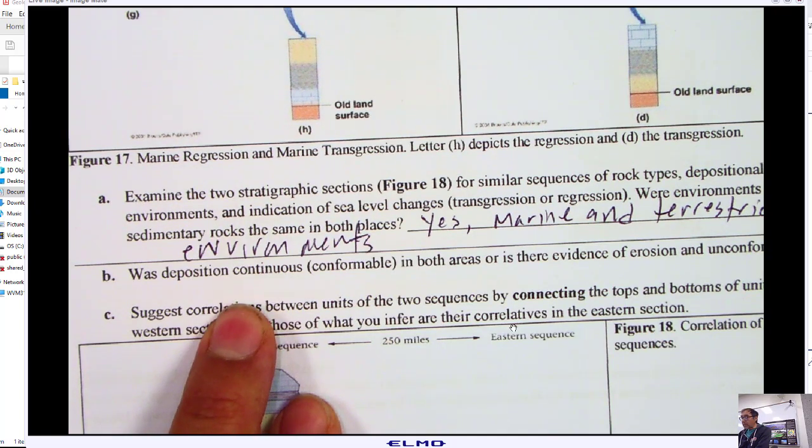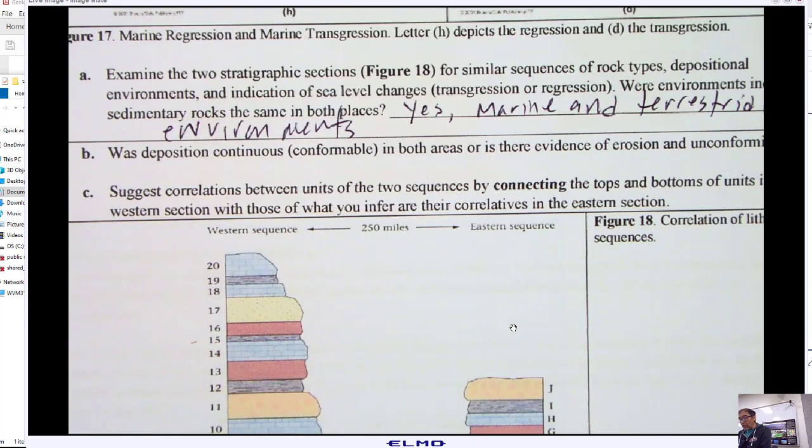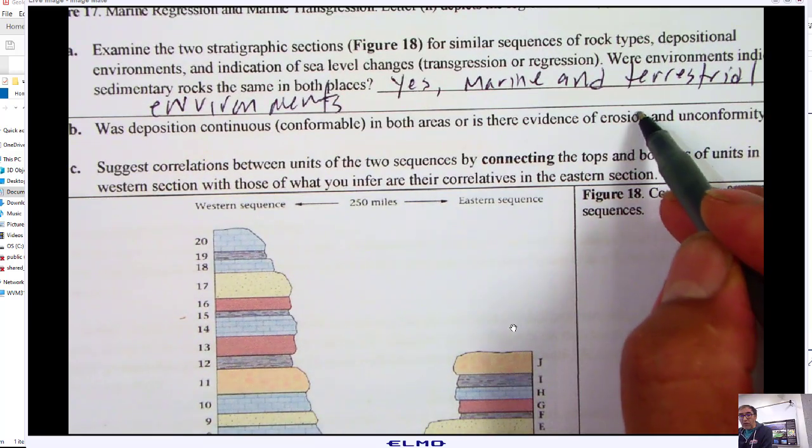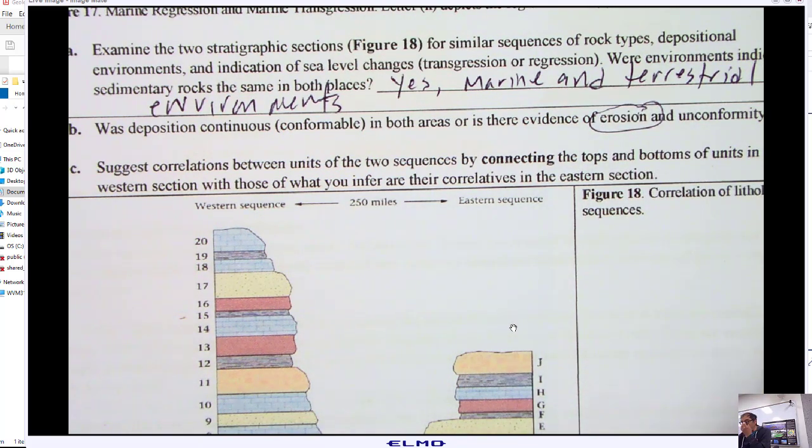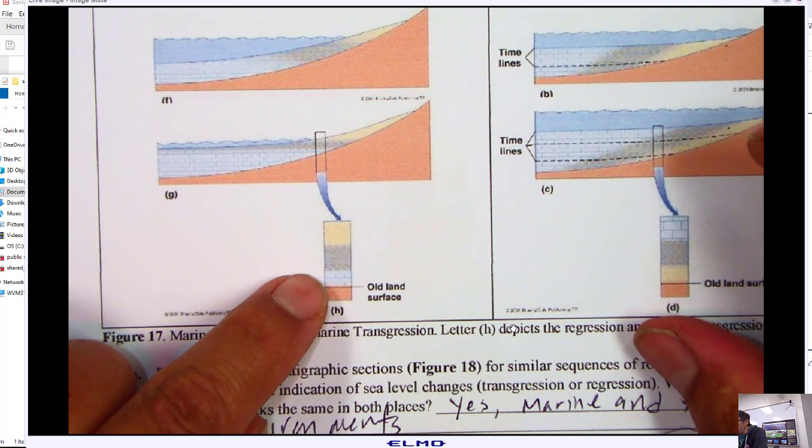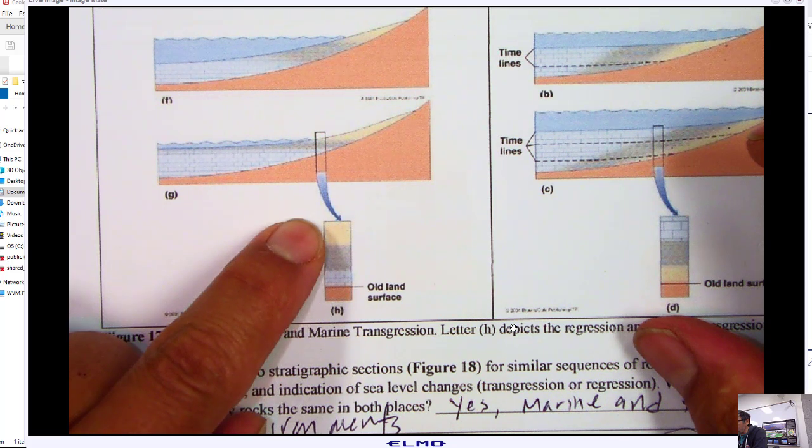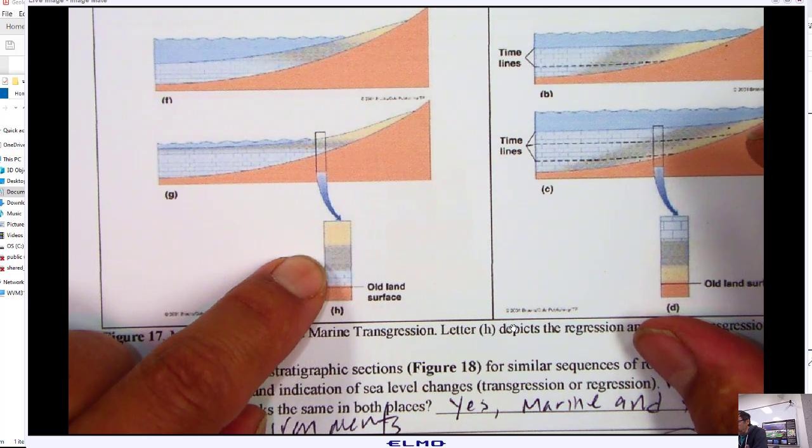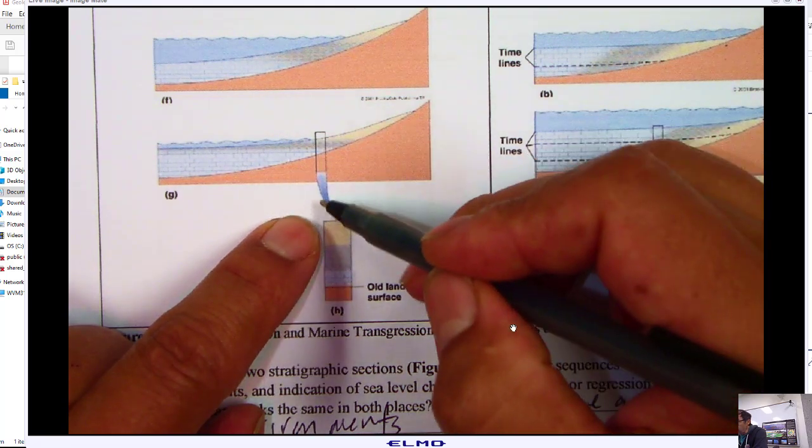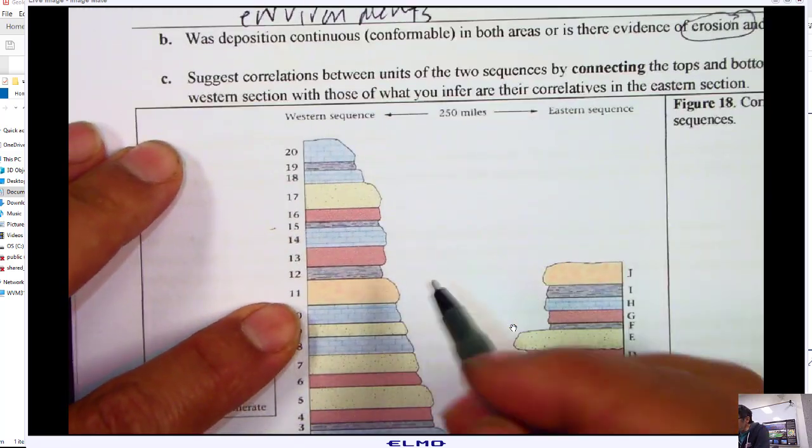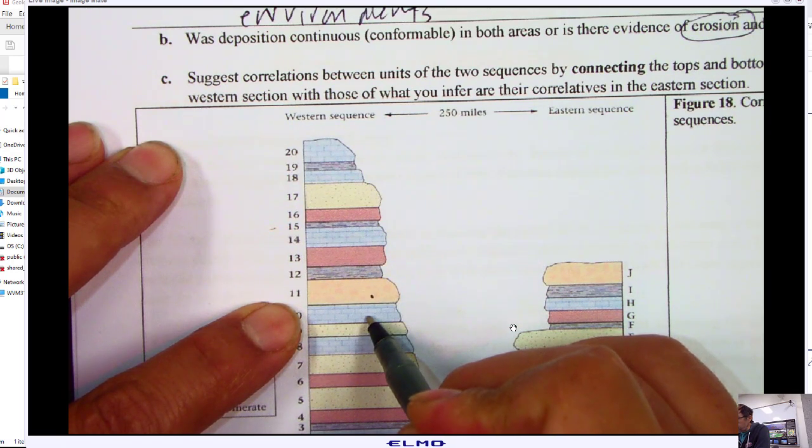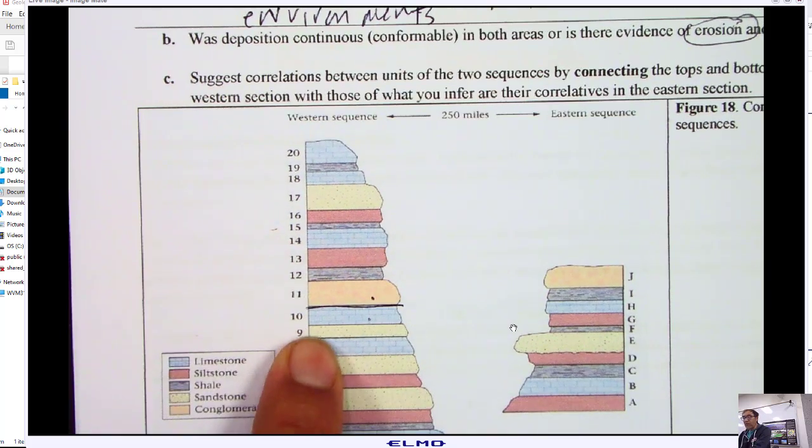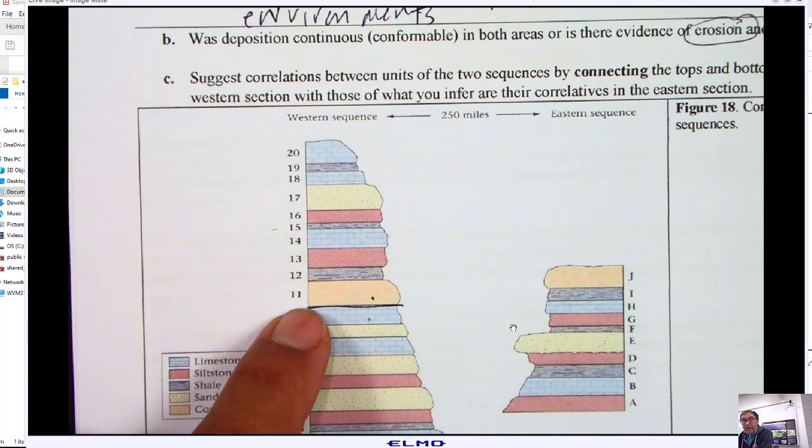Was deposition continuous in both areas, or is there evidence of unconformity? There is evidence of unconformity, so it wasn't continuous. There was erosion. What is evidence? Remember the facies. For something to be continuous, I should see limestone, shale, sandstone. In other words, sandstone should never be next to limestone because you have to have shale in between. Remember, conglomerate would be even above the sandstone. The fact that I see conglomerate, a river deposit, on limestone over here, this is definitely an erosion.